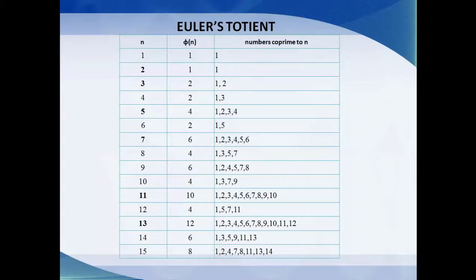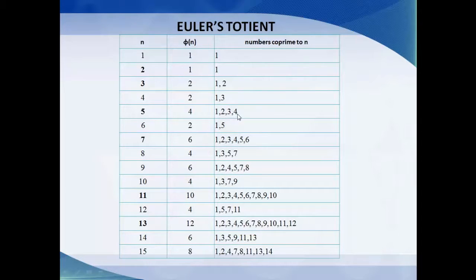Before going to RSA cryptography, let's discuss Euler's totient. We have numbers 1 to 15 and we need to get the Euler's totient, represented as φ(n). φ(n) is the number of integers co-prime to n. For example, for n=5, the numbers co-prime to 5 are 1, 2, 3, 4, so φ(5) = 4. For n=8, the co-primes are 1, 3, 5, 7, so φ(8) = 4. For n=12, the co-primes are 1, 5, 7, 11, giving φ(12) = 4.